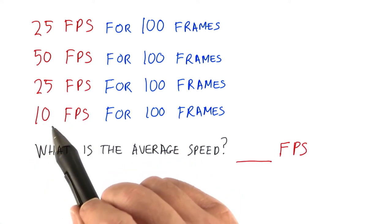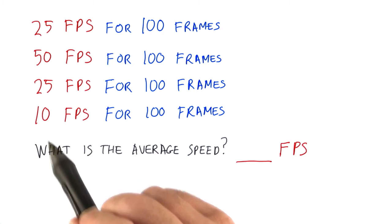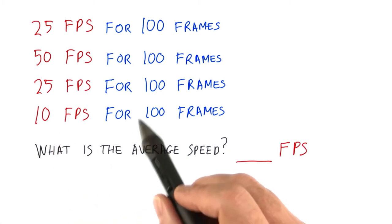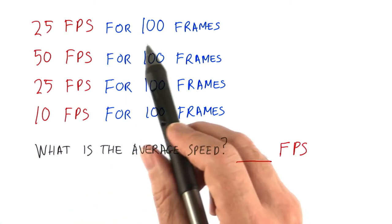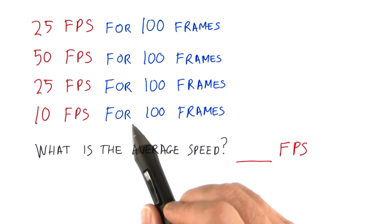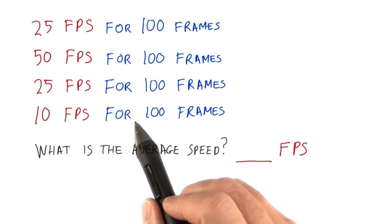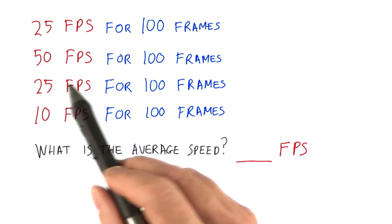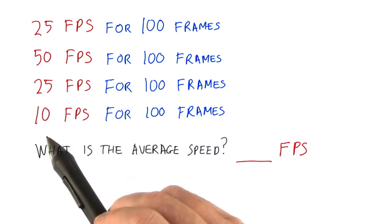Say we think about this question in terms of miles per hour. Instead of 400 frames, say you drive 400 miles. If you drive 25 miles per hour for the first 100 miles, 50 miles per hour for the next, and so on — how long will the trip take you?